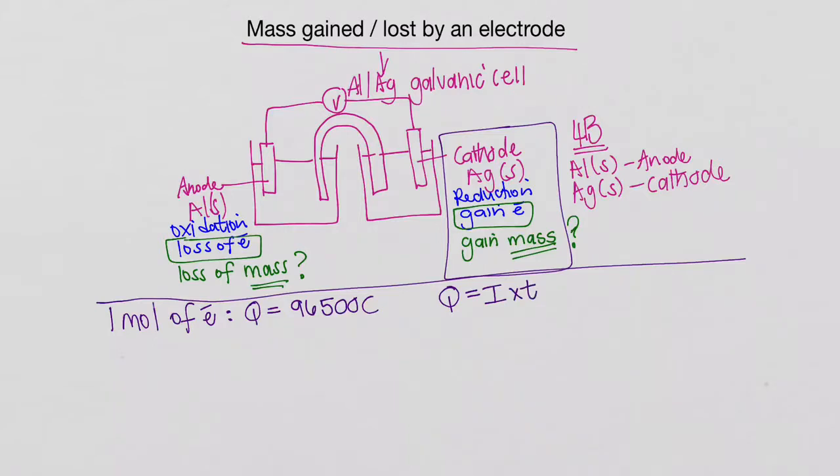is Q is equal to I times T. Remember the Q is the charge measured in coulombs. The I is the current, and we measure that in ampere. Time, T, and we measure in seconds.